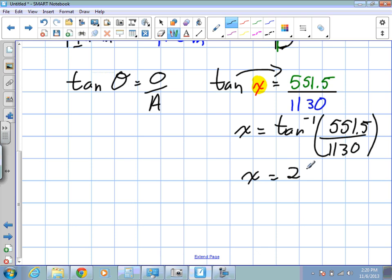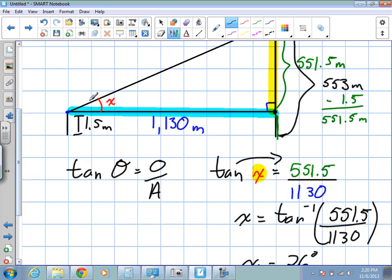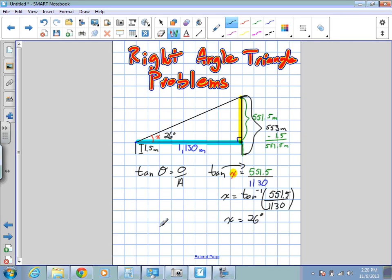You can walk across. So the angle of elevation to the top is 26 degrees in this question. So we want to see what you think.